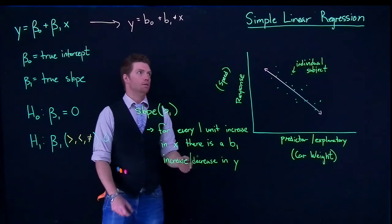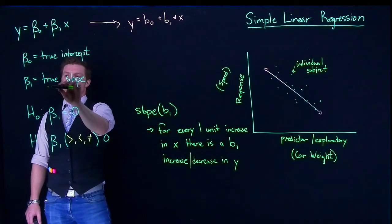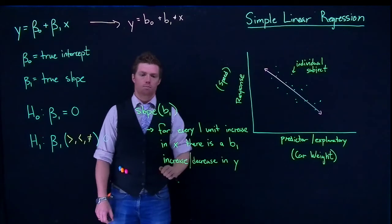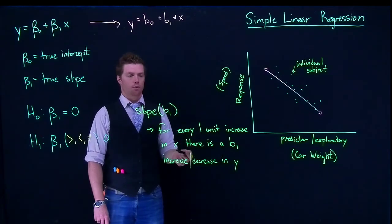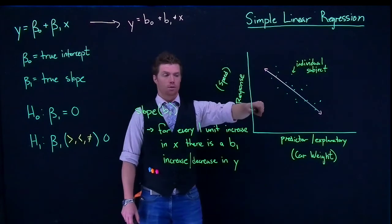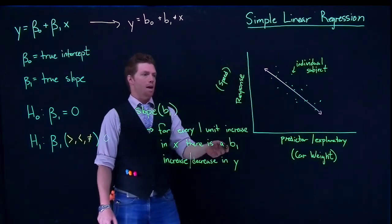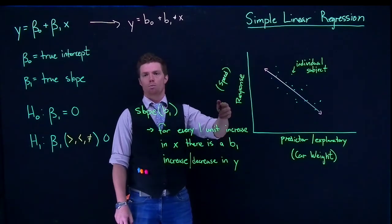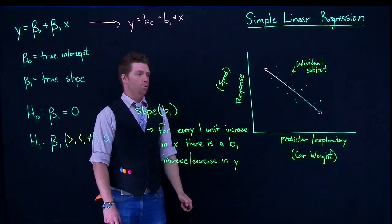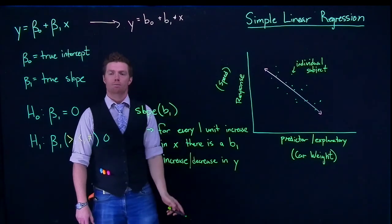In conclusion, when we perform simple linear regression and produce the model, we are testing whether there is a true slope, and we do that by finding a confidence interval using b1. We interpret the slope by saying for every one unit increase in x, there is a b1 increase or decrease in y. In our specific example, for every one unit increase in weight, there would be, say, a 0.25 decrease in speed in miles per hour. From here we can talk about the specifics of how we actually perform that confidence interval.